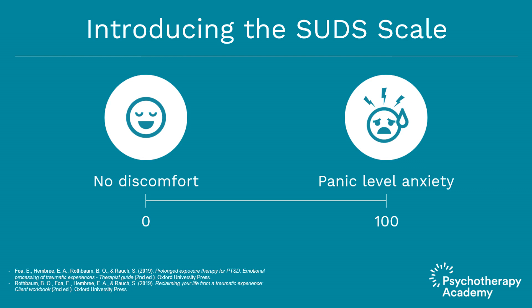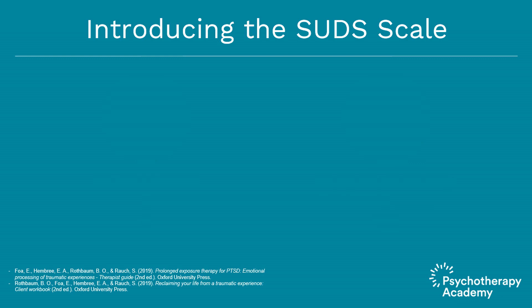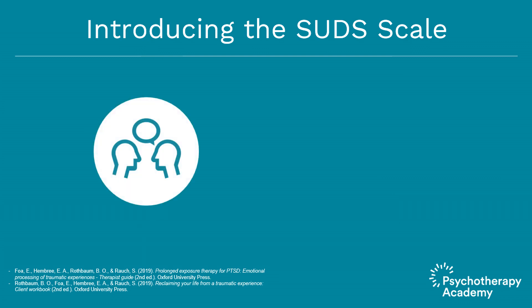Usually when people say they have a SUDS of 100, they're experiencing physical reactions such as sweaty palms, palpitations, difficulty breathing, feelings of dizziness, and anxiety. Because people are different, what makes one person feel 100 SUDS may not be troublesome at all for someone else — this is why we call it a subjective scale. For example, imagine you and I are standing near a deep pool and someone pushes us both in. If I can't swim, I may feel a SUDS of 100 immediately, but if you can swim or aren't afraid of deep water, you may be a 0.